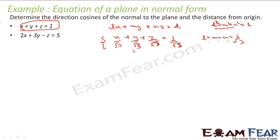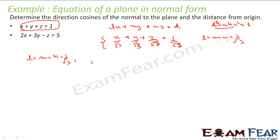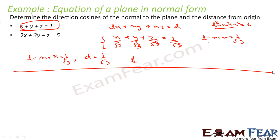I divide everything by root 3. Now my L² plus M² plus N² is equal to 1. Comparing the two equations, my L is equal to M is equal to N is equal to 1 by root 3. Those are all the direction cosines, and the distance is 1 by root 3. That is my answer.